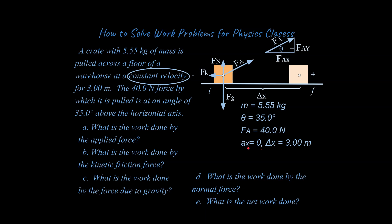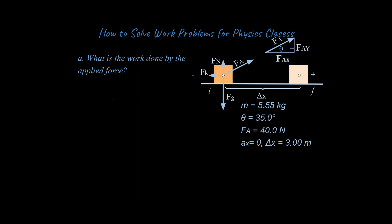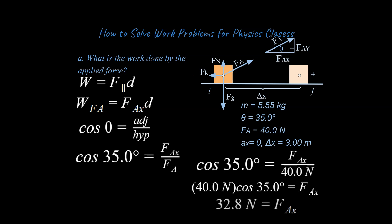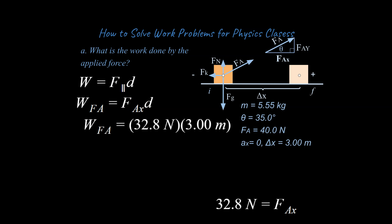Constant velocity implies that the acceleration is going to be zero. For the first part — what is the work done by the applied force — we write our equation and sub in what we're talking about. We need the force applied in the x-axis, the component parallel to the motion, so we use cosine. We plug in values and solve for F_ax. Then we multiply that force by the displacement through which it's applied, and we get 98.4 joules for the work done by the applied force.